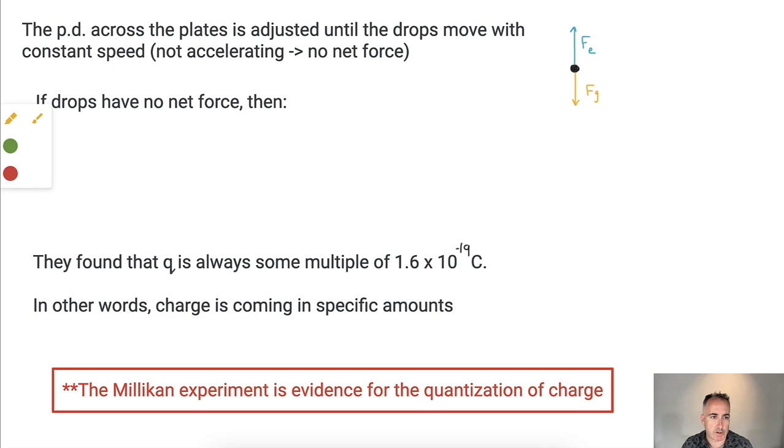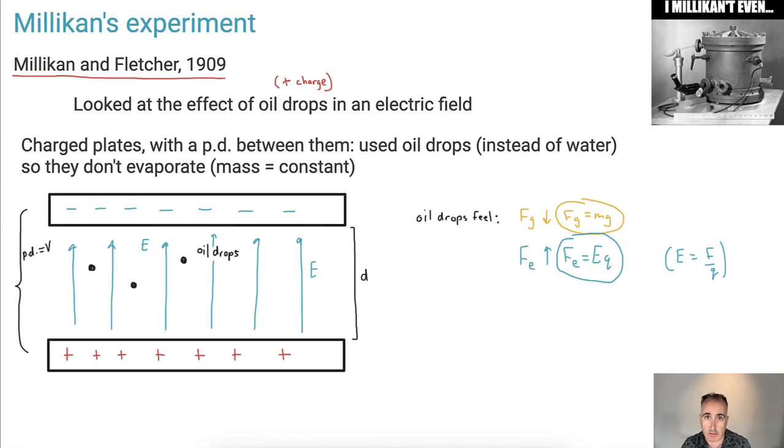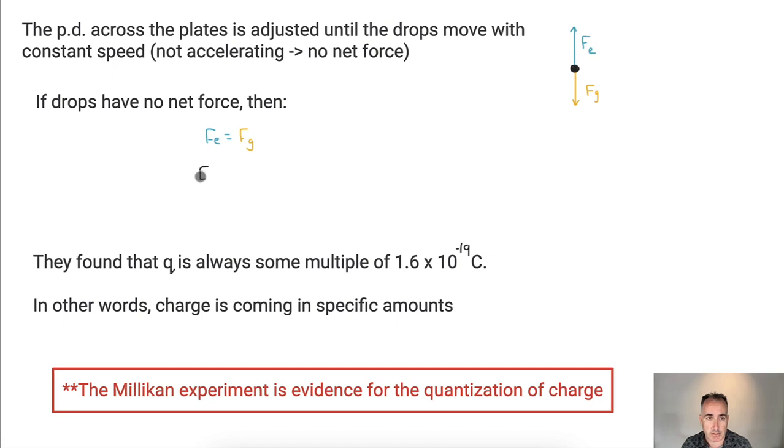So if they have no net force, we can say Fe equals Fg. Well, if that's the case, then I can put them together, can't I? Remember, Fe is Eq. So that means Eq must equal Mg. From that, they can conclude: let's get Q by itself. So if we're going to get Q by itself, we get Mg over E. We get M times G over the electric field strength. And this was basically one of the important equations that they could use. The charge is going to be M times G divided by the electric field strength.